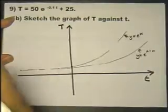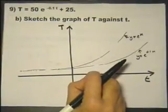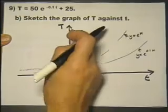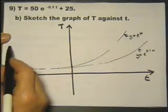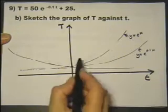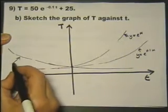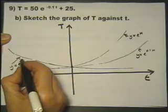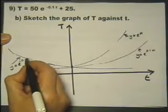Now what about this minus? That minus actually is going to reflect in the Y axis. So in other words, it's going to look something like this. So this is going to be Y equals E to the minus 0.1 of X.